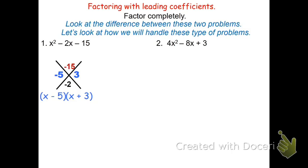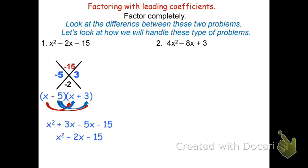If you want to go back and check your work, you can always verify by distributing. If I distribute the x into that x plus 3, I get x squared plus 3x. Distributing the negative 5, I get negative 5x and then minus 15. Combining like terms, the 3x minus 5x is negative 2x, and this becomes x squared minus 2x minus 15, which was the original problem. This shows that we have the factored form correct: the quantity x minus 5 times the quantity x plus 3.